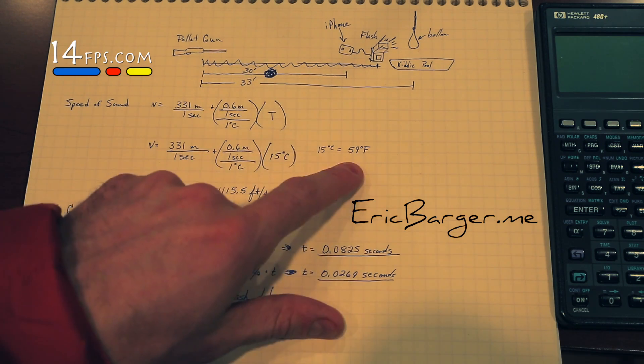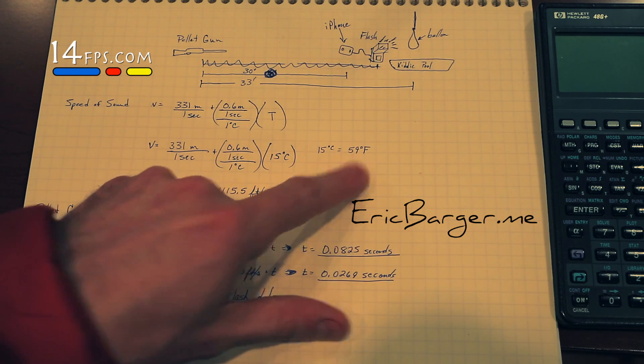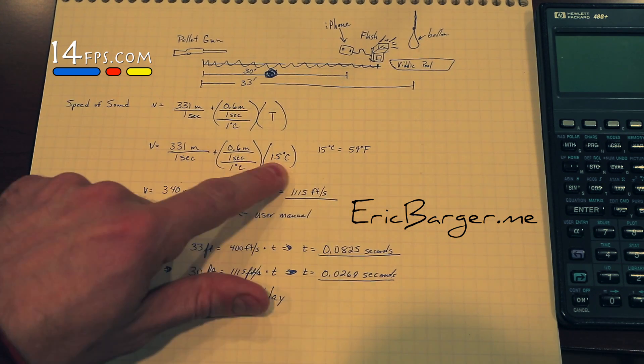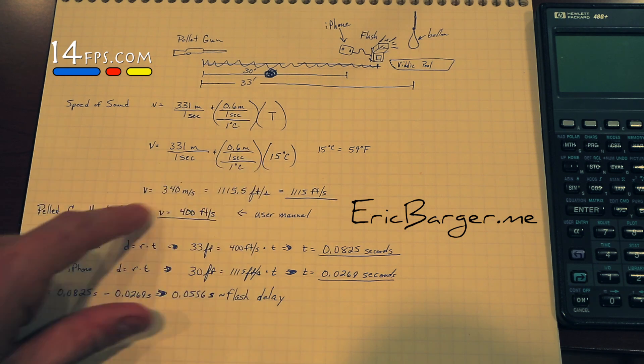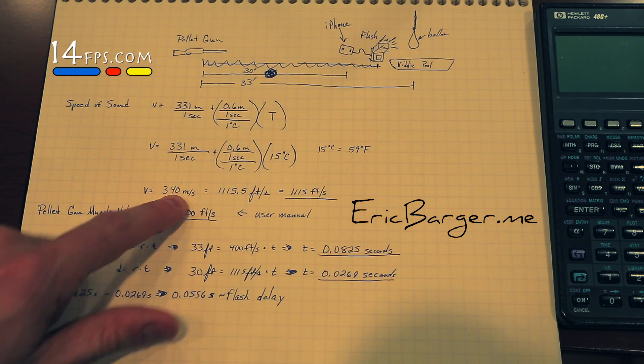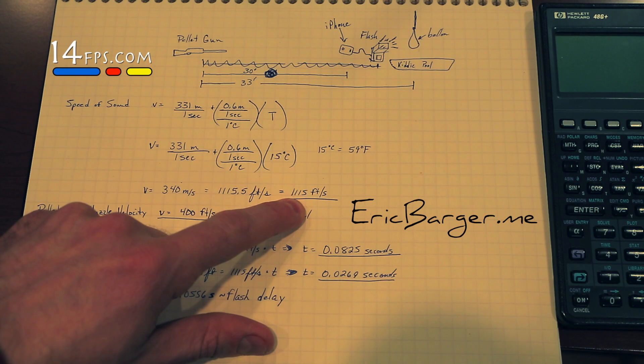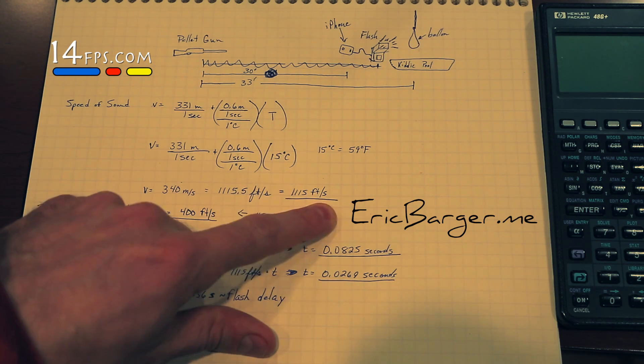Our temperature at the time we tested was 59 degrees Fahrenheit, which is 15 degrees C. We plugged that into the equation for the speed of sound and we got 340 meters per second. We took it as 1,115 feet per second.